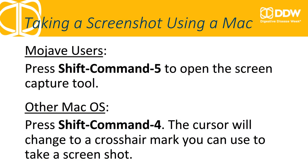We'll now discuss the process if you're using a Mac. If you're using Mojave, press Shift-Command-5 to open the Screen Capture Tool. If you're using any other Mac operating system, press Shift-Command-4. The cursor will turn into a crosshair mark that you can use to outline the table you want to save as an image.